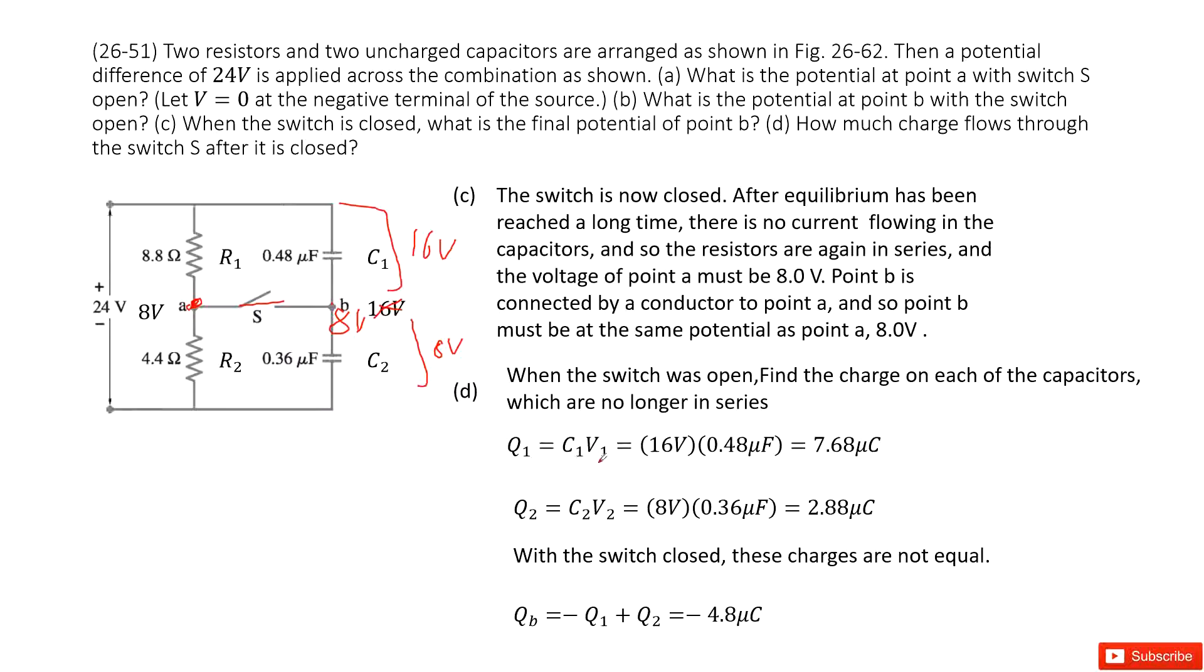Q1 is C1 times V1, Q2 is C2 times V2. Now when the switch is closed, these charges are not equal. So the switch flows, it's just minus Q1 plus Q2. You get it there. Thank you.